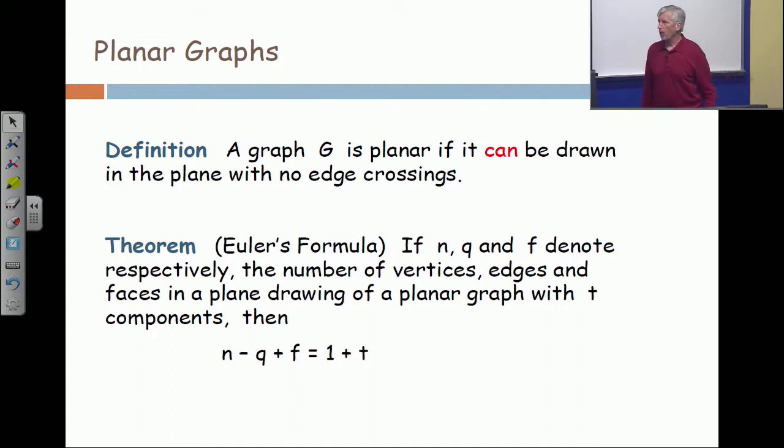We also studied Euler's formula. When you draw a planar graph without crossings, you create vertices, edges, and faces, which can then be counted. If you take the number of vertices minus the number of edges and add to it the number of faces, the answer is always t plus one, where t is the number of components. This is Euler's formula, the same Euler as in Euler circuit.